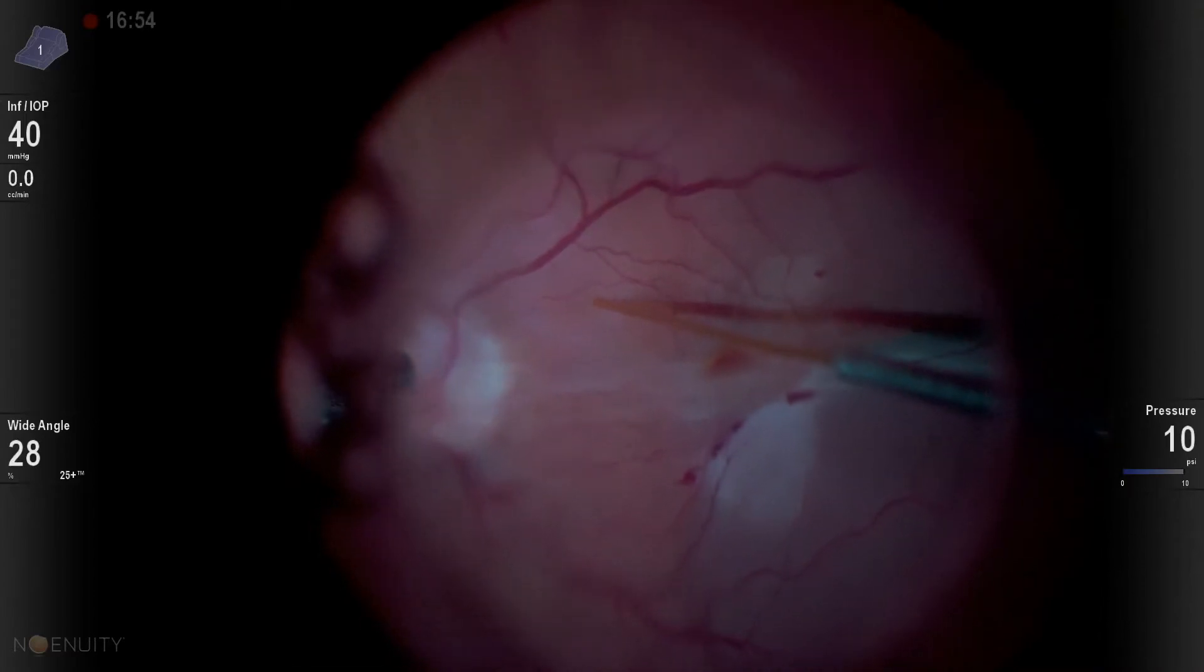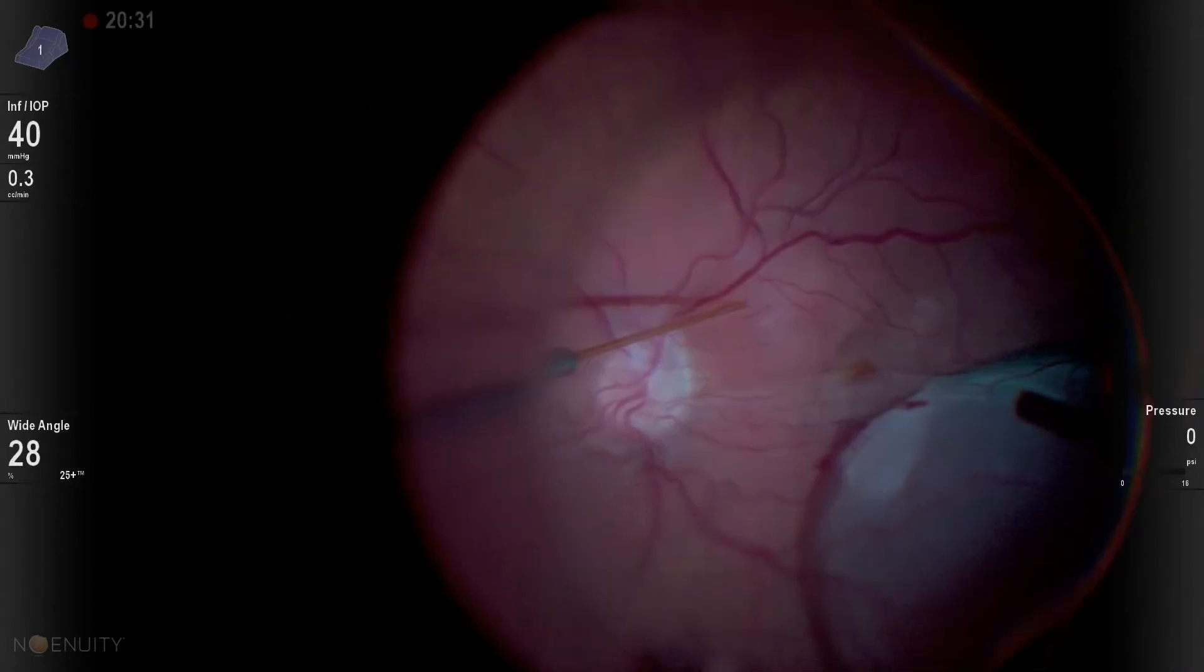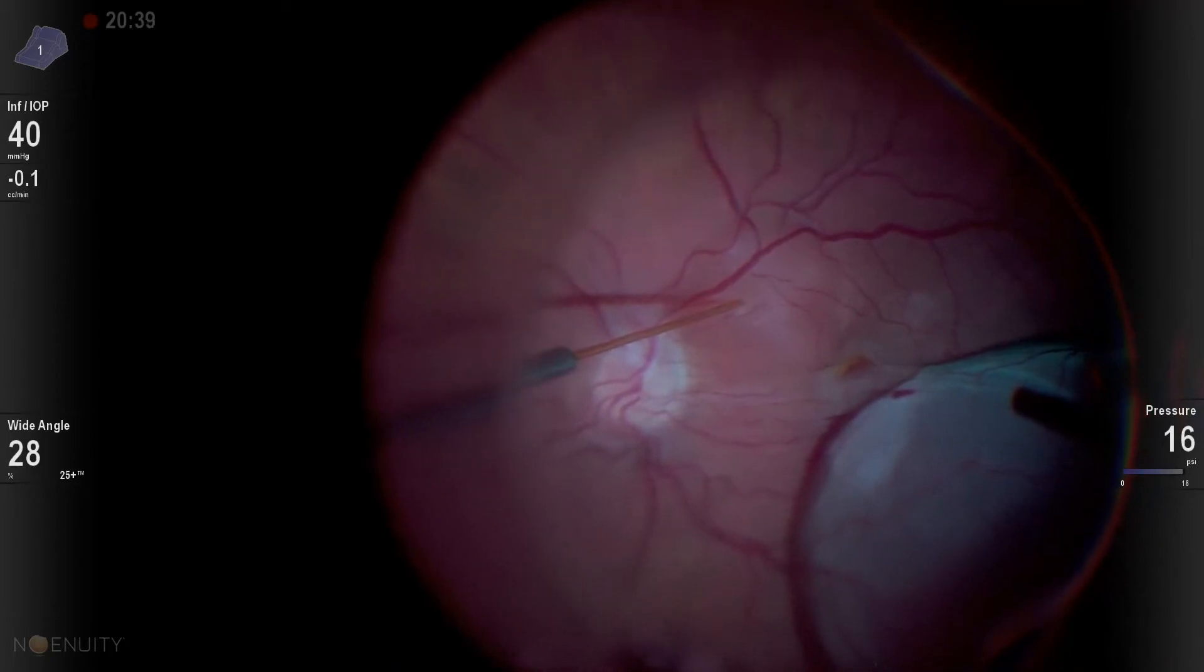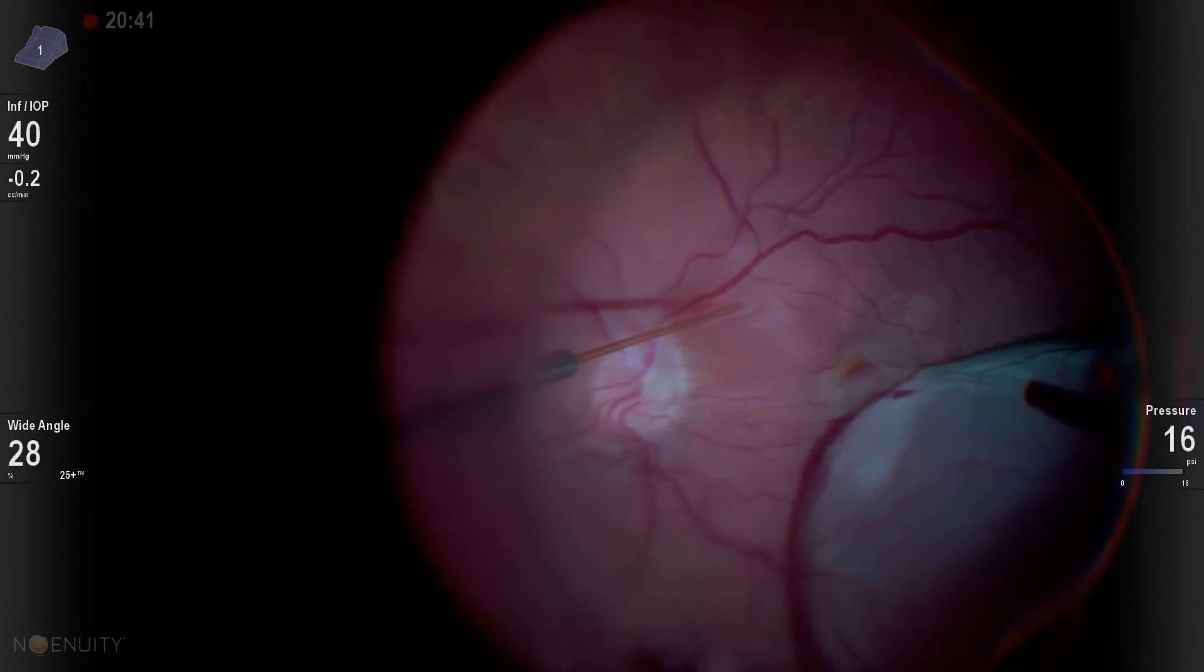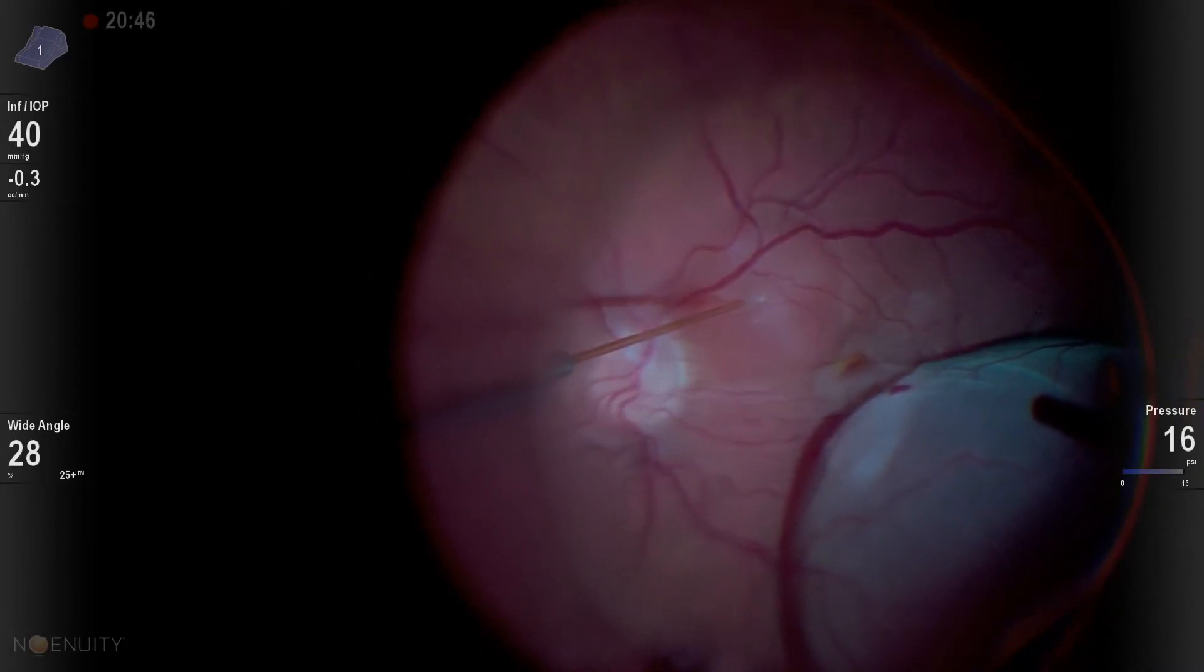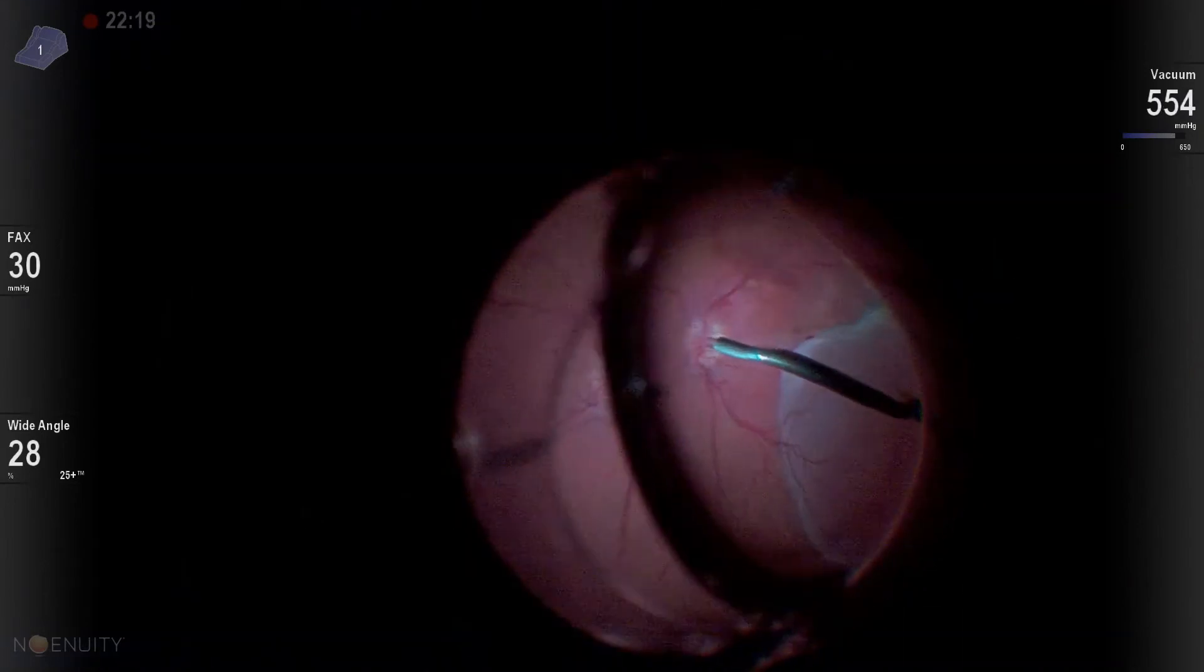So after blowing up several of these different blebs and having really no success with anything going into the macula, I'm left to try and figure out what our best option is for how to drive this large, bullous amount of subretinal fluid into the macula. And so what I end up doing, I try left-handed, thinking maybe a different approach would allow this to dissect more to the macula, and you can see that it just doesn't.